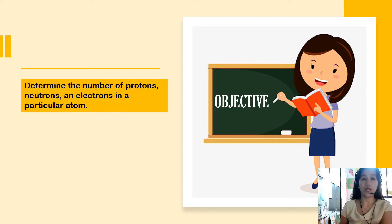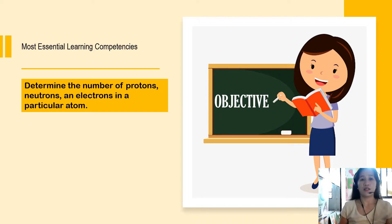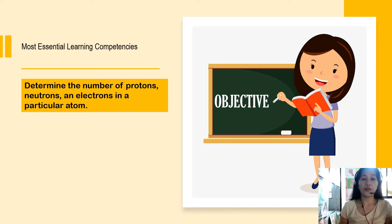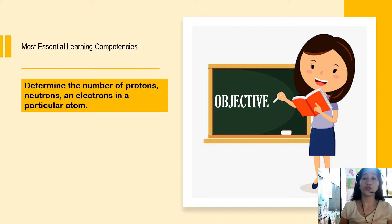For today's objective, based on our most essential learning competencies, we have only one: in this lesson, you are going to determine the number of protons, neutrons, and electrons in a particular atom.